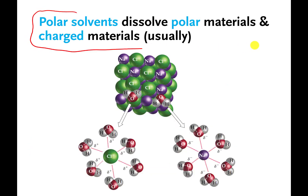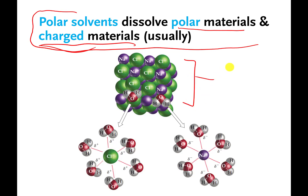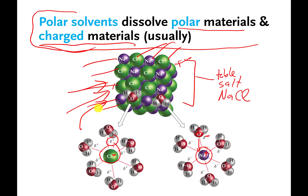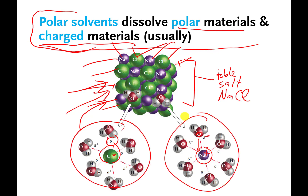Polar solvents usually dissolve other polar materials and materials that have charges. This little cube here represents table salt — NaCl. If I throw a bunch of water molecules at it, the little positive side of the water molecule will interact with the full negative charge of the chloride ions, and the negative oxygen side will interact with the full positive charge of the sodium. If you throw enough water molecules at table salt, they will chip away at all the little pieces and break them apart. The sodiums and chlorides will end up all alone surrounded by water — and that's basically what dissolving is.